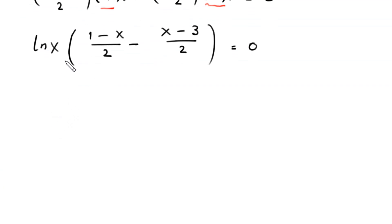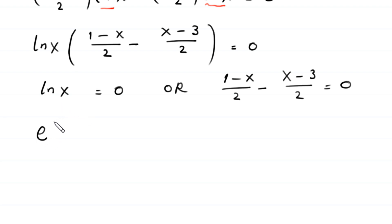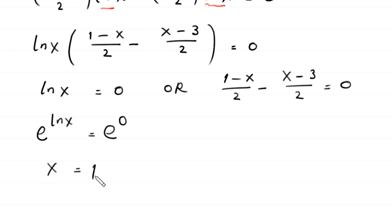Factoring out ln x: ln x times [(1 minus x) over 2 minus (x minus 3) over 2] equals 0. We have a product of two factors equal to zero. Either ln x equals 0, or the bracket expression equals 0. From ln x equals 0, we raise e to both sides: e to the power ln x equals e to the power 0, so x equals 1. This is the first solution, x₁ equals 1.